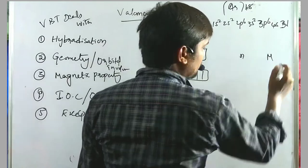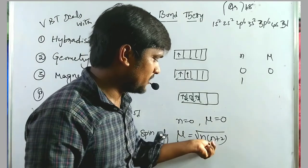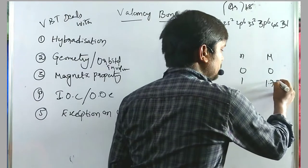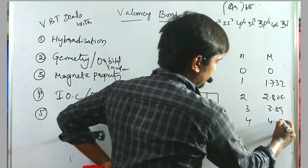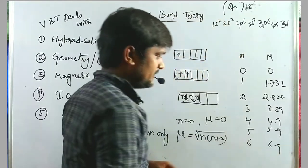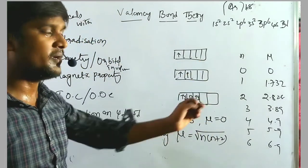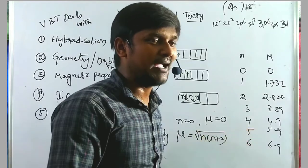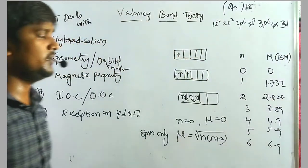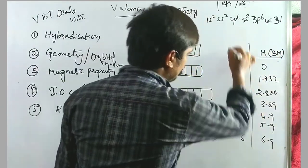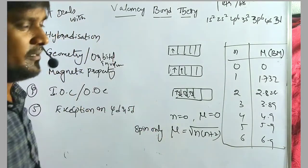Using the spin-only formula: if n=0, μ=0; n=1, μ=1.732; n=2, μ=2.828; n=3, μ=3.89; n=4, μ=4.9; n=5, μ=5.9; n=6, μ=6.9 Bohr magnetons. A common exam question asks: if a system has four unpaired electrons, what is its magnetic momentum? The answer is 4.9 Bohr magnetons. Bohr magneton is the unit of magnetic momentum.